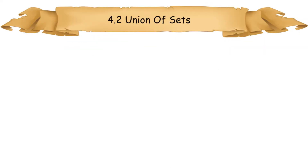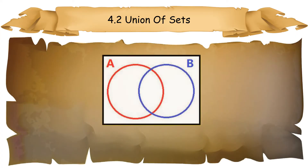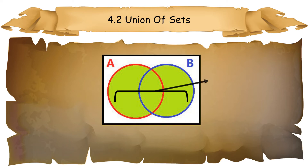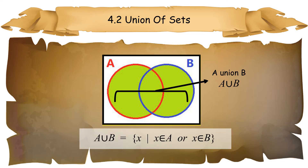4.2 Union of Sets. The Venn diagram shows two sets A and B that overlap. The notation represents the entire region covered by both sets A and B. This region is called the union of the two sets.